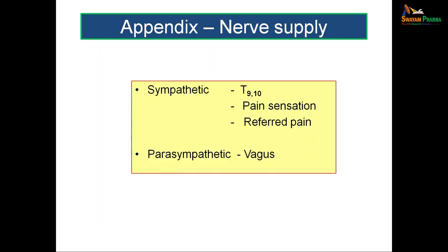The nerve supply of the appendix is important. Sympathetic fibers from the 9th and 10th thoracic spinal segments carry pain sensation, producing referred pain to the umbilical area via the 10th spinal segment and somatic fibers supplying the umbilicus. So pain from the appendix is initially referred to the umbilical region. Parasympathetic fibers are derived from the vagus.